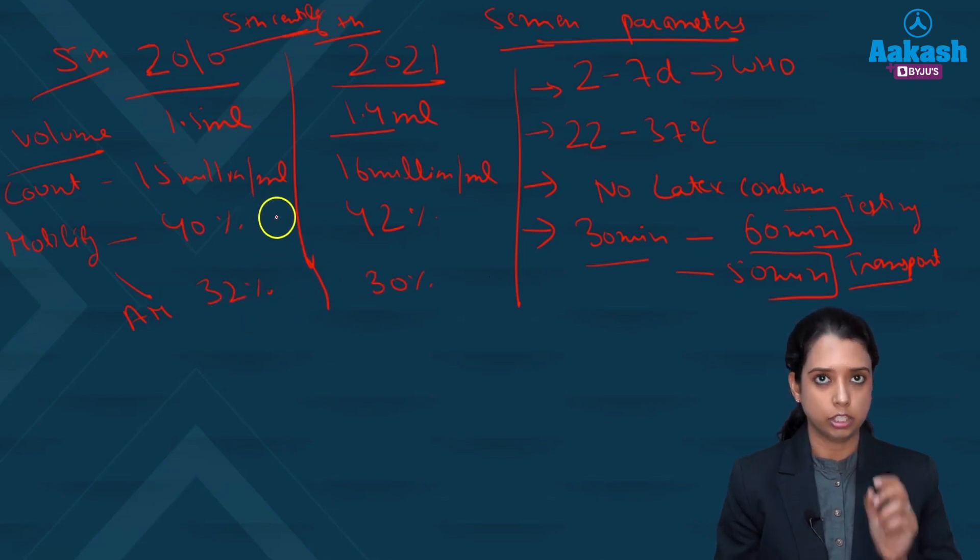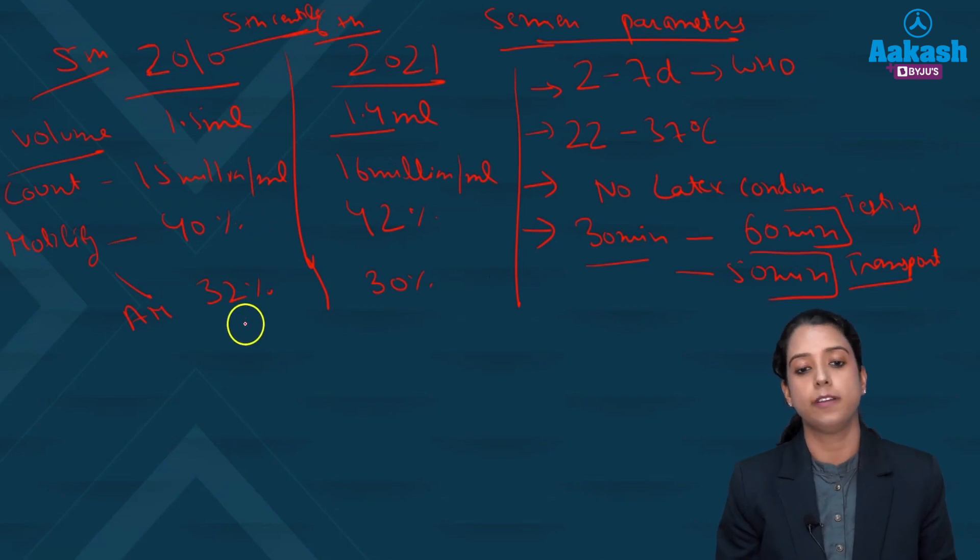It is frustrating that such a small figure change has been there. But you have to remember whatever the changes are there. So active motility should be more than 30 percent not 32 now.